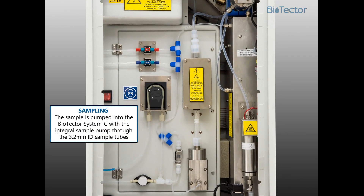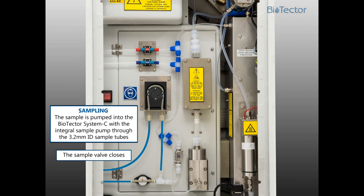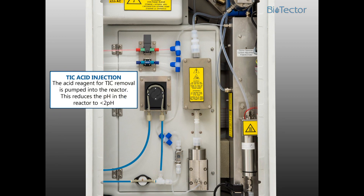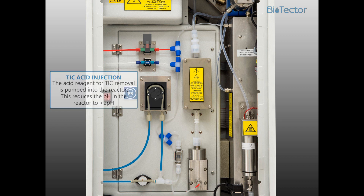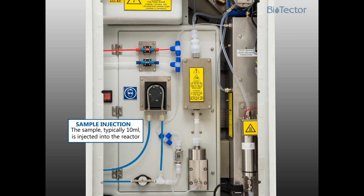The sample is pumped into the BioTector System C with the integral sample pump through the 3.2mm ID sample tubes. The sample valve then closes. The acid reagent for TIC removal is pumped into the reactor, reducing the pH in the reactor to less than 2. The sample, typically 10mL, is injected into the reactor.